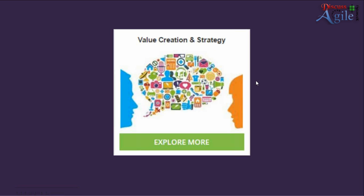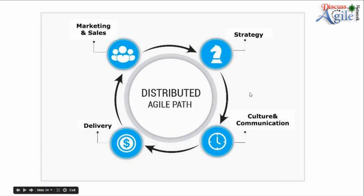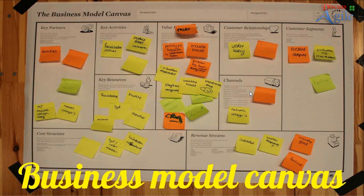The distributed agile path has four steps — aimed at both multinationals with distributed teams and client-provider relationships. We have modules for: marketing and sales; strategy and value creation; culture and communication; and delivery. The top two are more for service providers offering services to customers, while culture and communication and delivery are valid for any setup. In each module we offer specific trainings and tools, many of which are freely available.